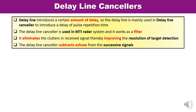First, what is a delay line and why is it used? A delay line is used to introduce a delay of a certain amount. It is commonly used in the delay line canceler because there is a requirement to introduce a delay equal to the pulse repetition time. The delay line canceler is used in MTI radar — the Moving Target Indicator radar — where it works as a filter.